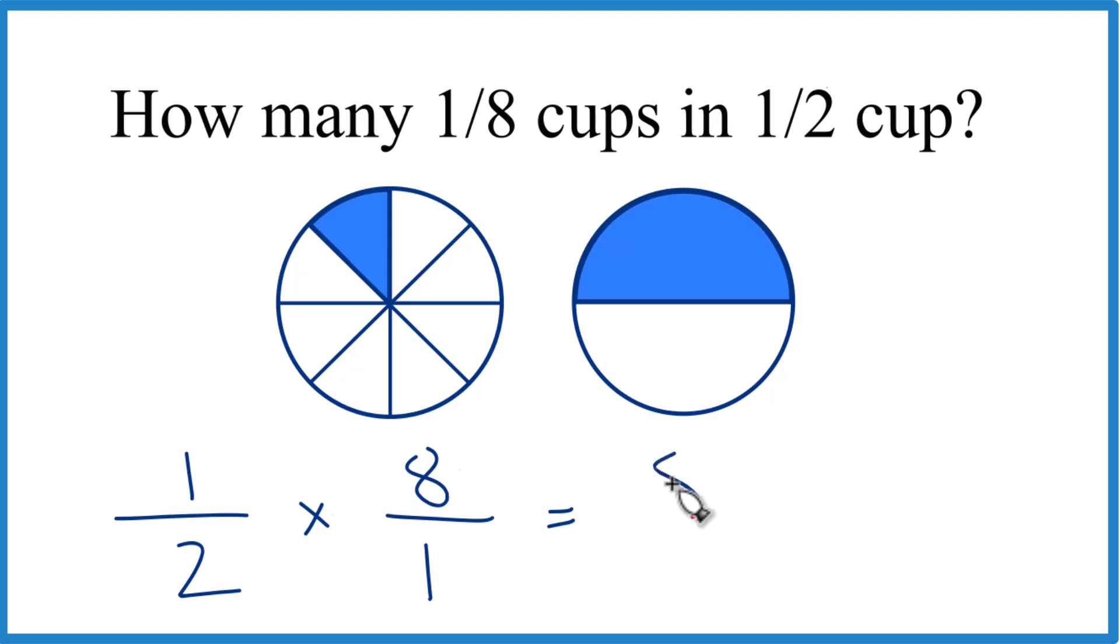1 times 8, that equals 8. 2 times 1 equals 2. And 8 divided by 2, that's 4.